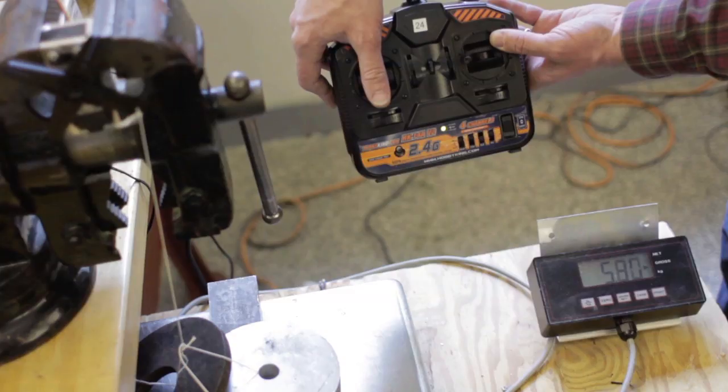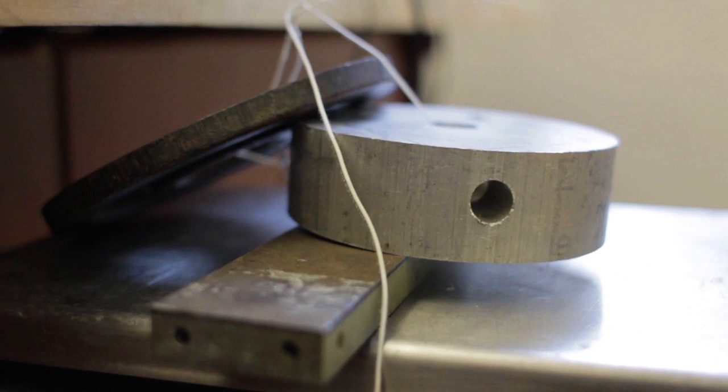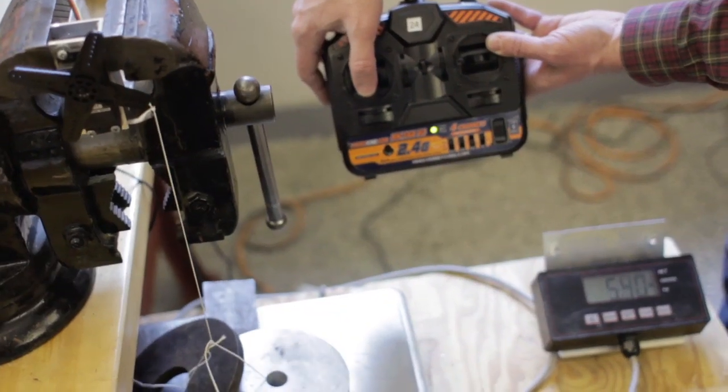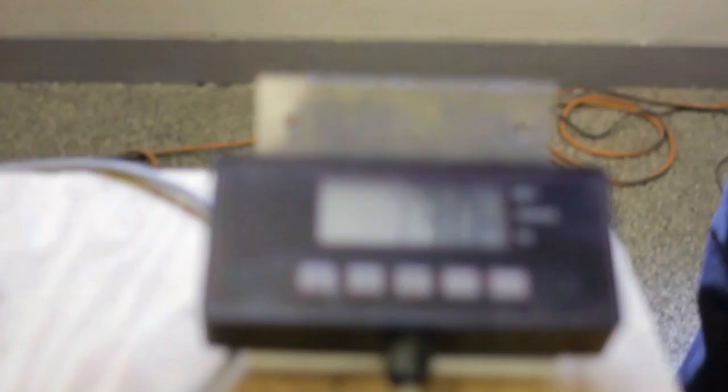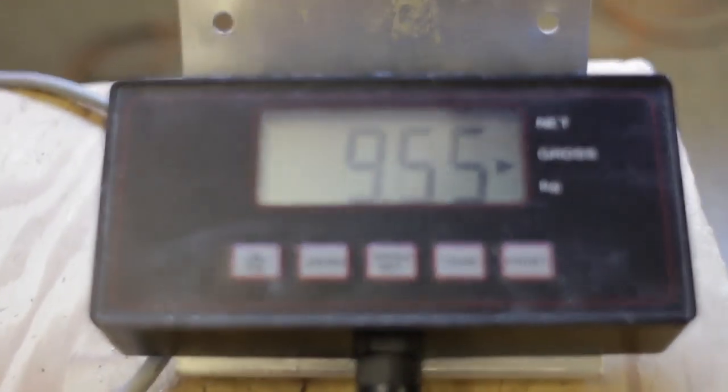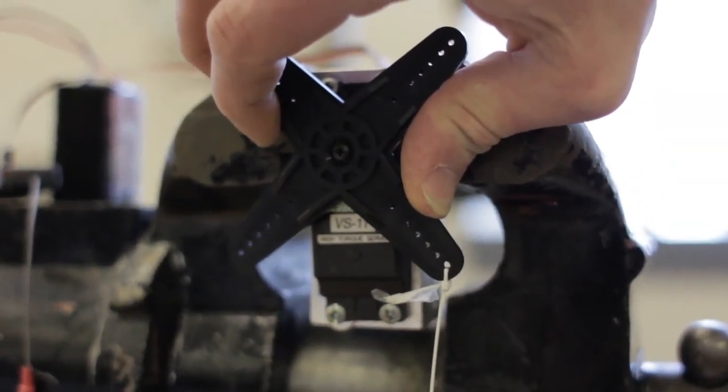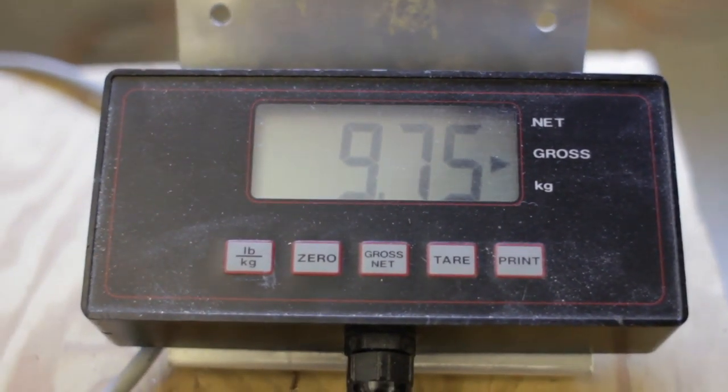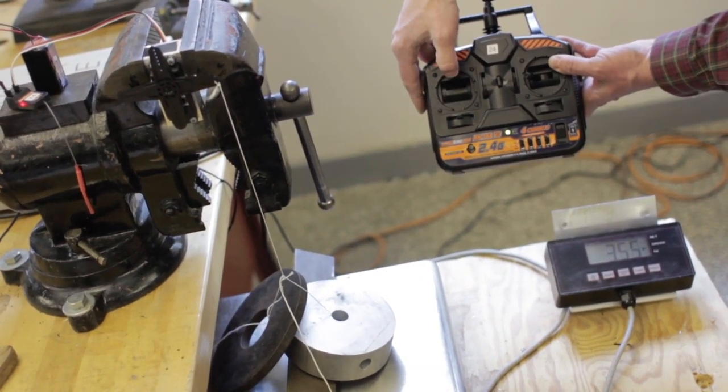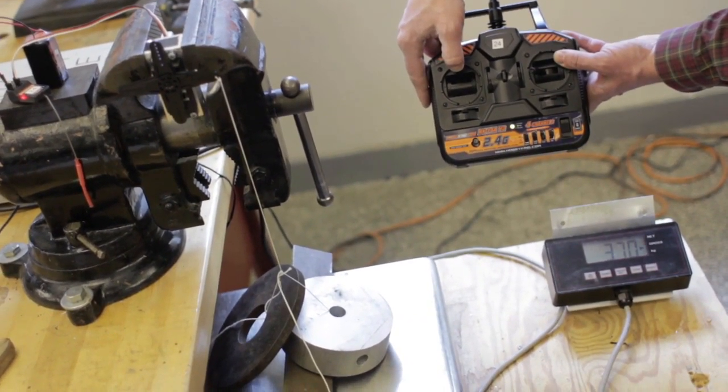In this setup, the servo motor will lift a 4.42 kg mass. As the motor lifts the mass, the readout on the scale should change. Here you see the initial weight, with slack in the string, is 9.75 pounds. This is about 4.42 kg. With the motor pulling at maximum capacity, the scale reads 3.7 pounds, which is 1.68 kg. A calculation tells us that the maximum torque available at the output shaft, according to our tests, is 1.47 Nm.